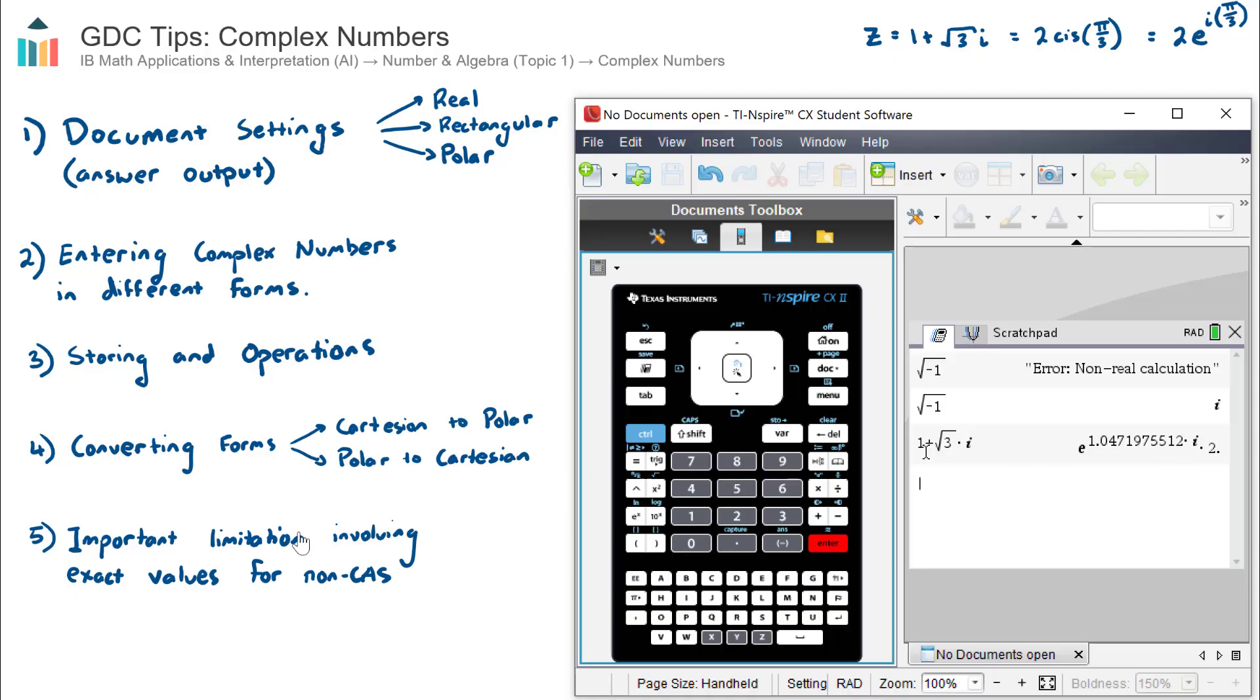And also just visiting this number five here, important limitations. They won't give an exact value in terms of pi on three. So this is actually 2e to the power of 1.047, which is pi on three as a decimal i. So just be very careful of that. Non-CAS calculators won't give you an exact value angle, or exact value argument, sorry. So just be cognizant that the outputs are going to be decimals. But the point of that calculation was, or that demonstration, was by setting my calculator into polar form, it actually converts my Cartesian form into polar form.